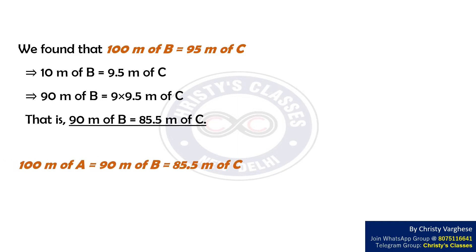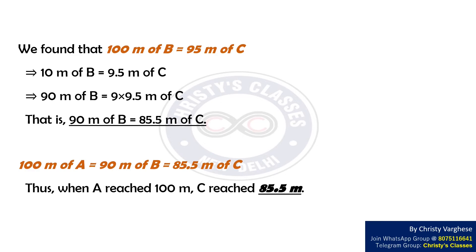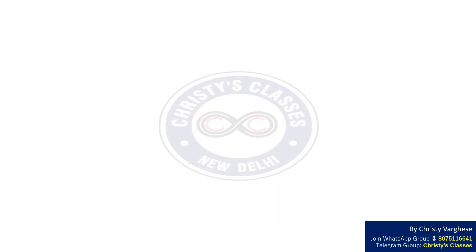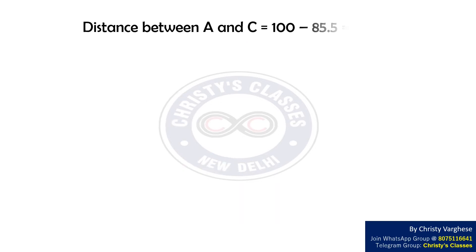That is, 90 meters of B equals 85.5 meters of C. From the above calculation, we get 100 meters of A equals 90 meters of B equals 85.5 meters of C. Thus, when A reached 100 meters, C reached 85.5 meters. Distance between A and C equals 100 minus 85.5, which equals 14.5 meters.